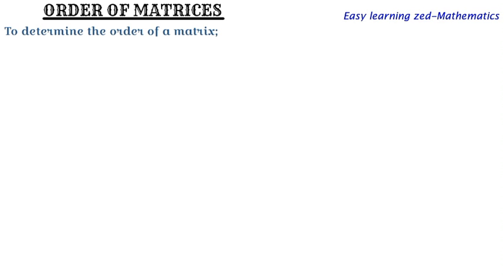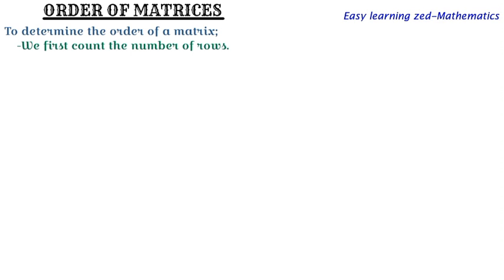To determine the order of a matrix, we first count the number of rows. That is the first thing. When you are writing the order of a matrix, you start first by writing the number of rows that matrix has.